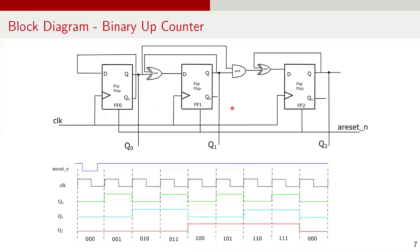Here is how a 3-bit synchronous binary up counter is structured. The three D flip-flops are labeled FF0, FF1, and FF2, corresponding to the least significant bit to most significant bit. A single clock signal drives all the flip-flops in parallel. Additional combinational logic gates control the toggling behavior of each flip-flop based on the counter state. For FF0, the D input is connected to FF0 QN so it toggles every clock pulse. For FF1, the D input is controlled by the XOR of FF0 Q and FF1 Q. For FF2, the D input is controlled by logic that ANDs FF0 Q and FF1 Q, then XORs the result with FF2 Q.